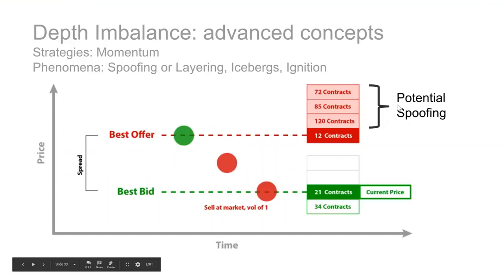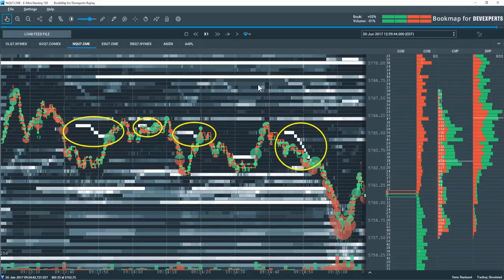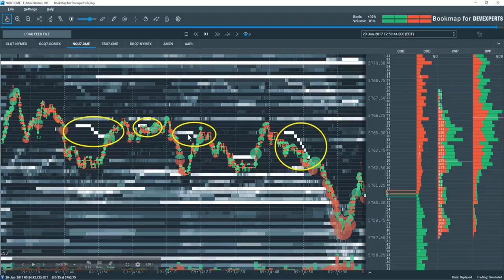Advanced concepts: potential spoofing here, imbalance to drive price lower and maybe get bids filled at lower price levels. There are also strategies around momentum, looking for spoofing, layering, icebergs, and ignition algos. Let me cover the ignition algo. You can see the example with the imbalance in the limit order book on the offer — we see it once, the algo comes in again, and finally this one drives price lower. Now we're starting to understand this data within the historical chart, all recorded. We're looking at about 10 seconds between each vertical dotted line — roughly a minute of price activity.